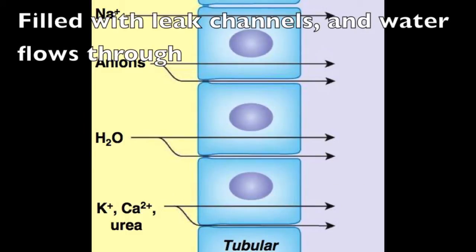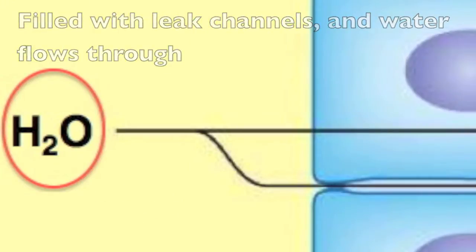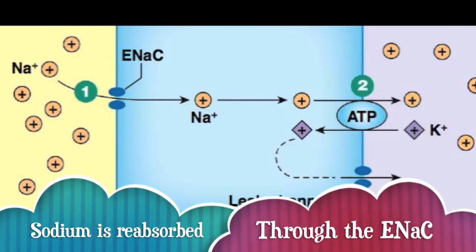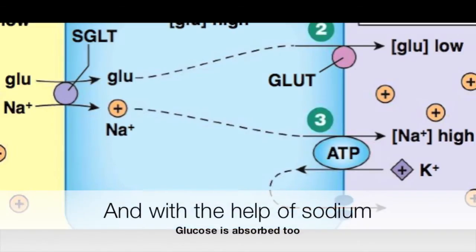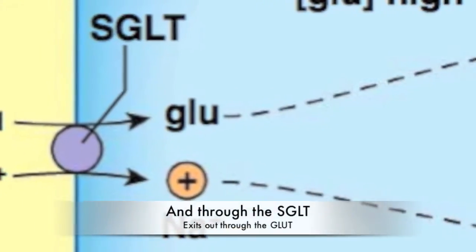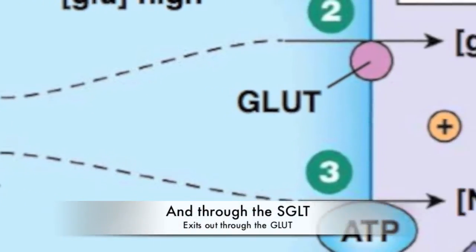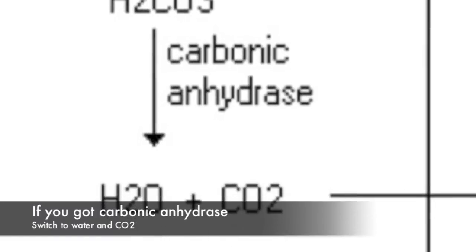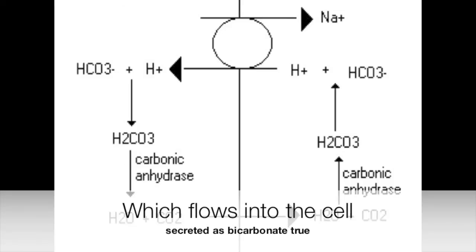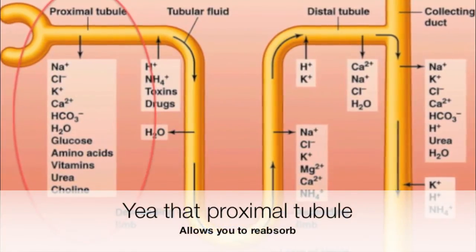Filled with leak channels and water flows through. Sodium is reabsorbed through the ENaC and now the NaK-ATPase sends it back. With the help of sodium, glucose is absorbed in through the SGLT, exits all through the GLUT. If you got carbohydrate, switch water CO2, which flows into the cell, secreted as bicarbonate — true.